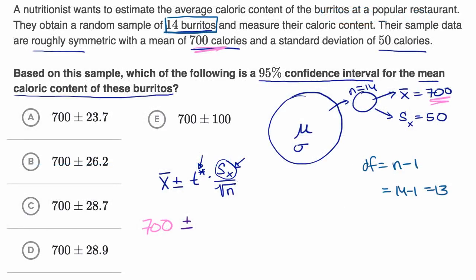So this part right over here is going to be 2.160 times, what's our sample standard deviation? It's 50 over the square root of n, square root of 14. So all of our choices have the 700 there, so we just need to figure out what our margin of error, this part of it, and we could use a calculator for that.